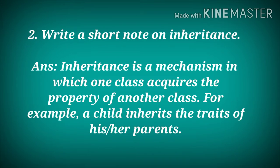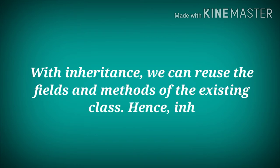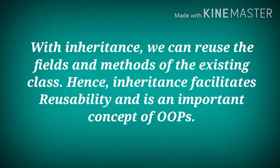Question number two: Write a short note on inheritance. Answer: Inheritance is a mechanism in which one class acquires the property of another class. For example, a child inherits the traits of his or her parents. With inheritance, we can reuse the fields and methods of the existing class. Hence, inheritance facilitates reusability and is an important concept of object-oriented programming.